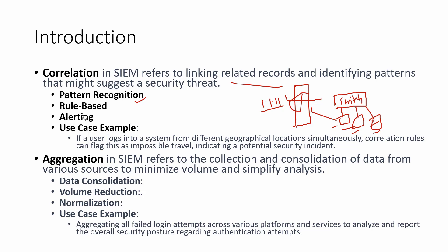So that is called correlation — but how do we identify it? We have multiple techniques. First is pattern recognition, where we identify patterns of events that might indicate a cybersecurity threat — for example, multiple failed login attempts followed by a successful login. Second is rule-based, where we utilize predefined rules and criteria to identify and correlate related events. Third is alerting — if a match is found, it generates an alert for the security team. For example, if a user logs into a system from different geographical locations simultaneously, the correlation rule can flag this as impossible travel, indicating a potential security incident.